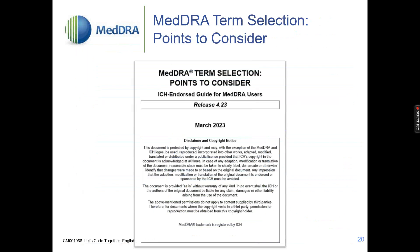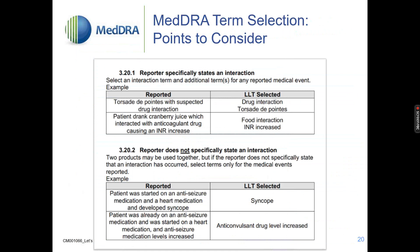The points-to-consider document — this is last year's version, apologies — but just to show you the guidance hasn't changed. When the reporter specifically states that there has been an interaction, then we code it. Only when it is specifically reported that there is an interaction. If it isn't specifically reported, you just code the consequences. For example, if a patient was taking two drugs together and developed syncope, syncope is coded — just code the consequence if there's only a temporal relationship.